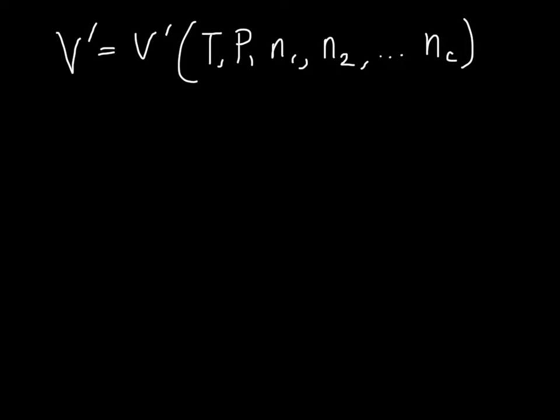So, V is a state function. We can write the exact differential of it, which we did this a lot before. It looks something like this, keeping P and all of the N constant, dT.